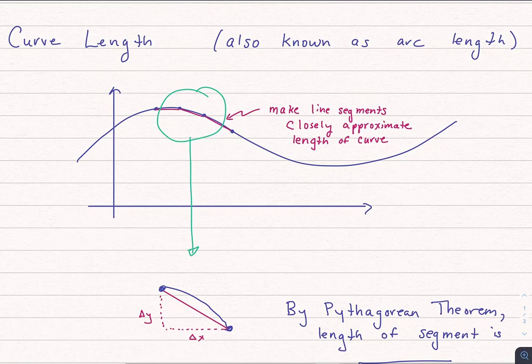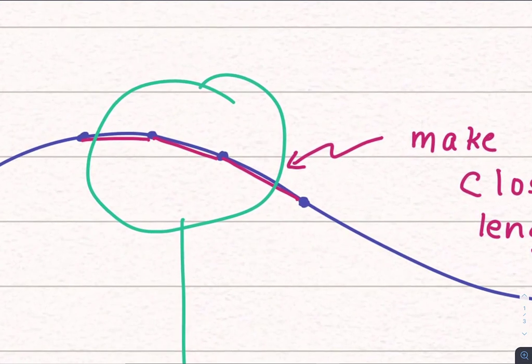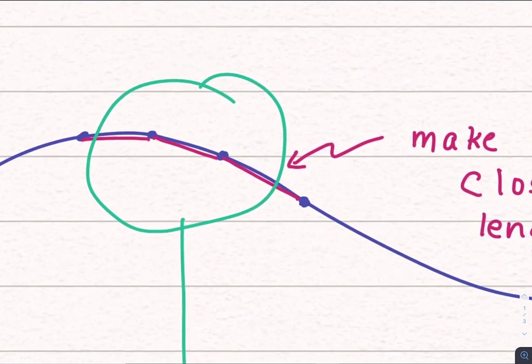All right, let's look at curve length. We also call it arc length. What we want to do is take this curve and break it up into tiny line segments where those line segments are awfully close to the actual curve itself.